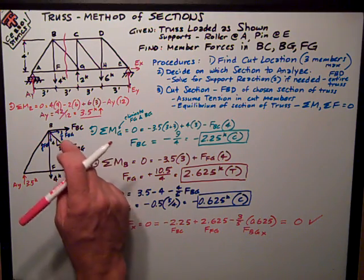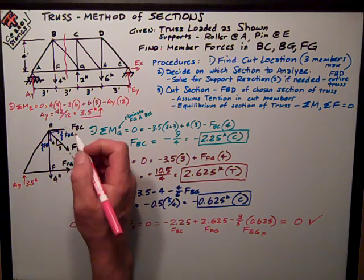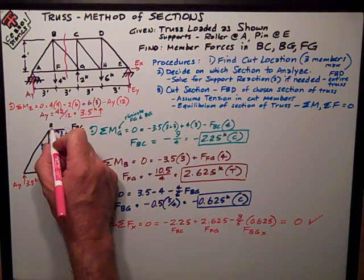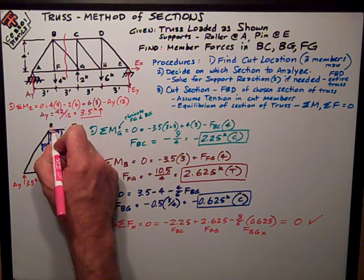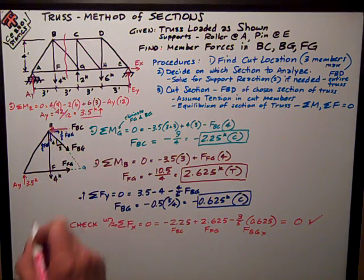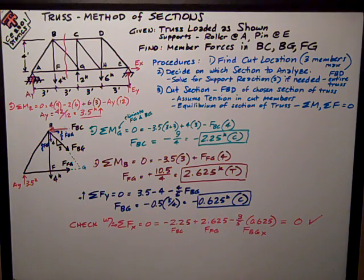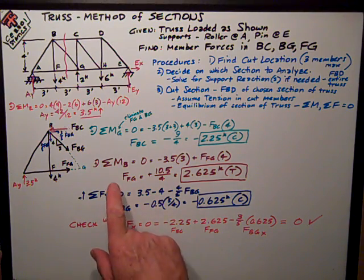So I really need to erase this arrow here that I've assumed in tension and correct it as pointing to the left. So FBC is compression, so it's pointing at the joint. That's important because that may come into play with my next equation.